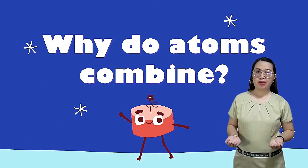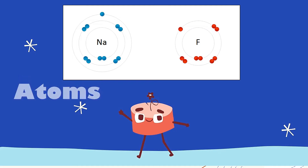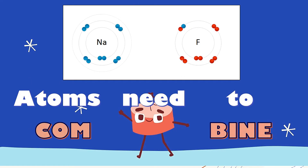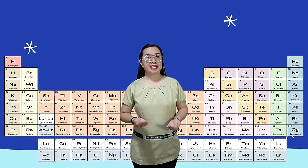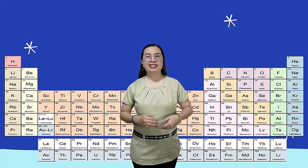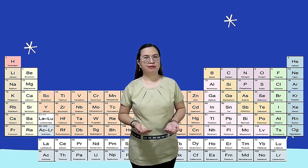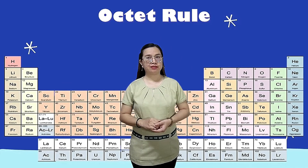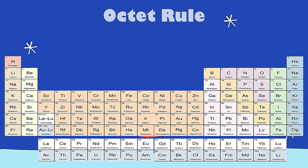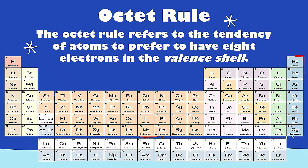Why do atoms combine? Atoms need to combine to become stable. For them to become stable, they need to follow the Octet Rule. What is the Octet Rule? The Octet Rule refers to the tendency of atoms to prefer to have 8 electrons in the valence shell.